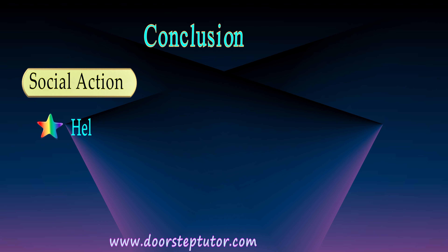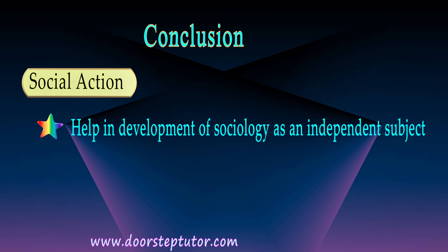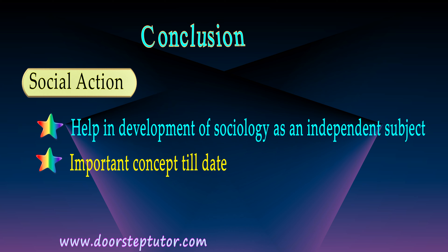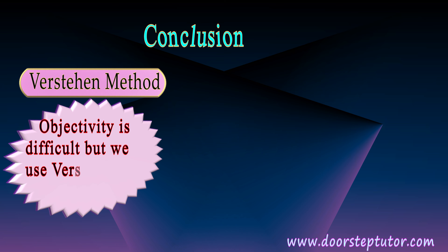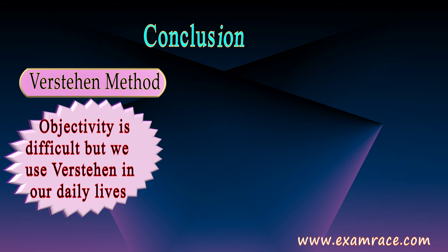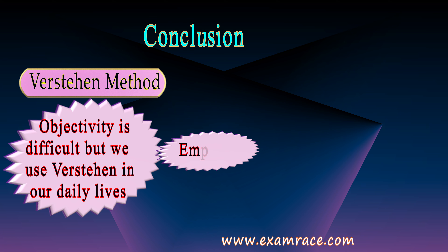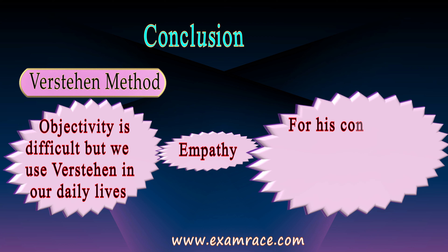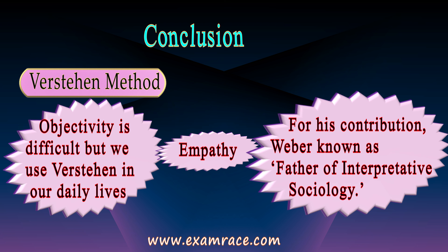Social action has helped in the development of sociology as an independent subject, free from natural sciences, and this concept is till date very important in the study of sociology. The Verstehen method, which is a way of studying social action, is still very important and we use it in our daily lives. How do we know that someone is trying to say something without using his words? We understand them — we try to understand the emotions behind what someone is doing. If someone is really sad, we try to empathize with them, not just sympathize. So all of this is the Verstehen method. For this contribution, Weber was known as the father of interpretive sociology.